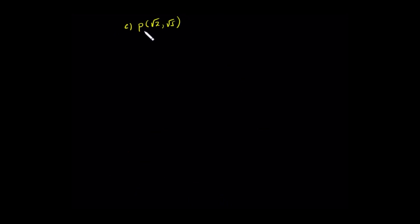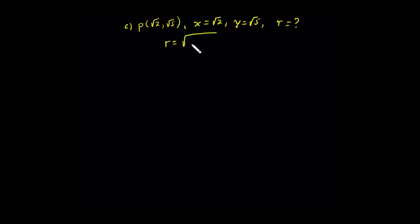For Case C, if the terminal side of angle theta in standard position passes through the point P with coordinates root 2 and root 5, what are the values of cosecant, secant, and cotangent of that angle theta? X is root 2, y is root 5. R is equal to the square root of root 2 squared plus root 5 squared, which is the square root of 2 plus 5. And this equals root 7.